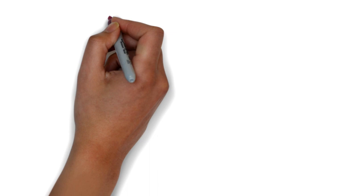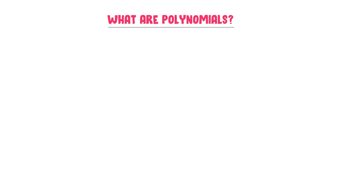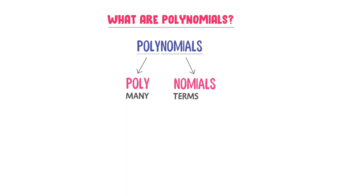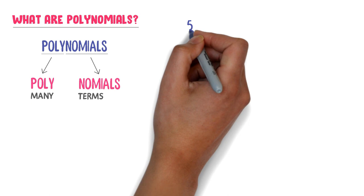Now, what are polynomials? The answer is simple — you have already learned them. The word polynomial is formed from two parts: poly and nomials. Poly means many and nominal means terms, so polynomial means many terms.